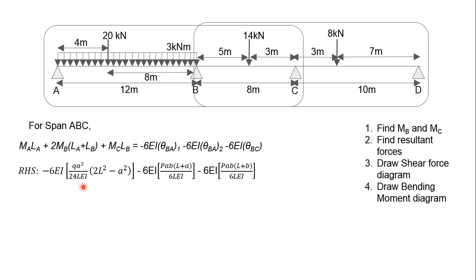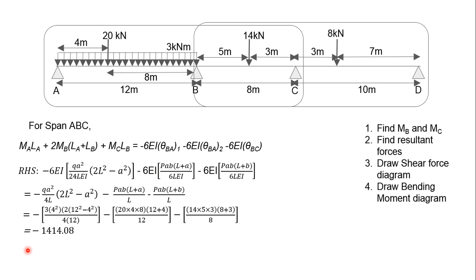Hence, by subbing in the left-hand side formula for the uniform load, you'll get QA² over 24LEI bracket 2L² minus A² close bracket minus 6EI. This is the formula for the concentrated load for the left-hand side. Because the force is acting here is at the left, while the force acting here is on the right, that's how you will use the left-hand side formula for BC. So when you sub in the values, you'll get negative 1414.08.